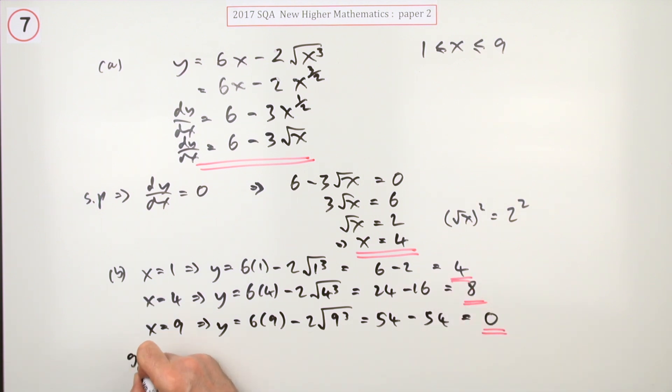So writing it out, greatest value is 8. Didn't ask for the second bit, I'll just put it in anyway, when x is 4.